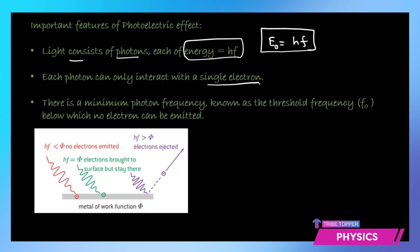There is a minimum photon frequency known as the threshold frequency F0, below which no electrons can be emitted. So we have to understand that not every photon falling on the surface will be able to eject an electron, because if the energy of the incident photon EI is less than the minimum energy requirement E0...